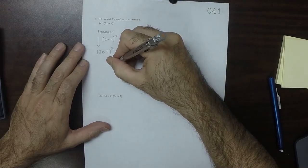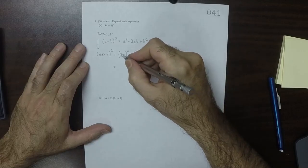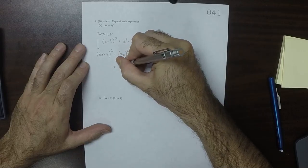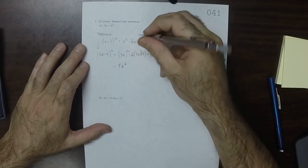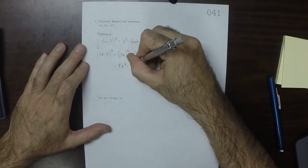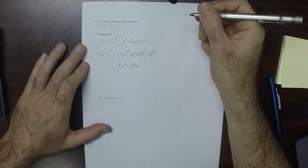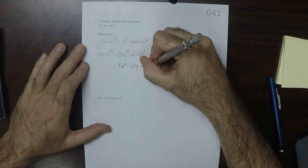and then carry all that out. That would be 9X squared, and then 2 times 3 is 6 times 4 is 24, so minus 24X, and then plus 16.